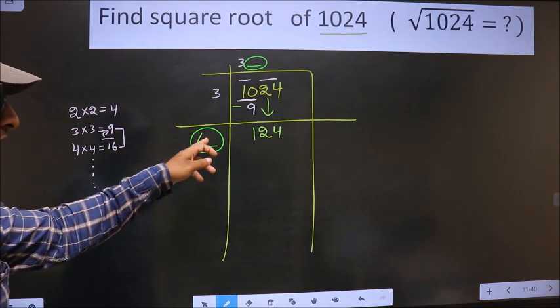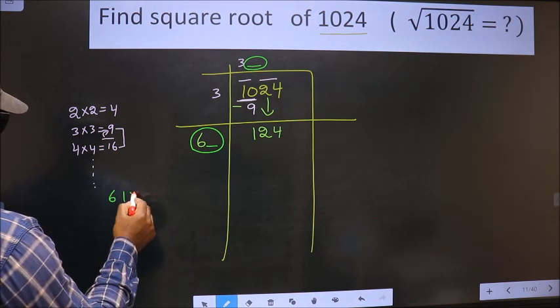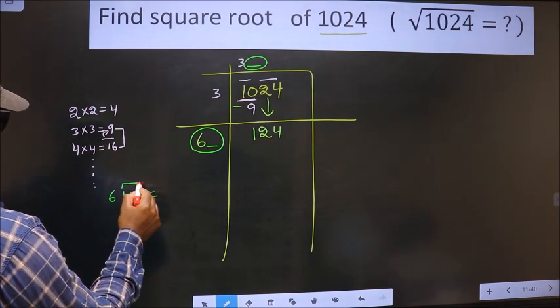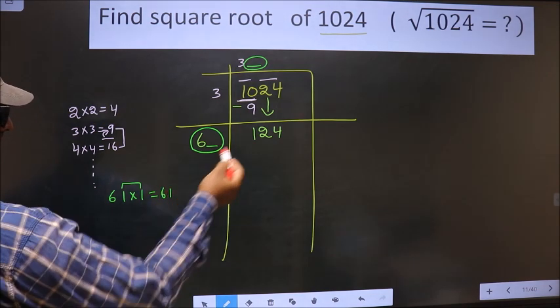So now let us find the number here. If I take 1, these two numbers have to be same. 61 into 1 is 61 itself. This is far from this.